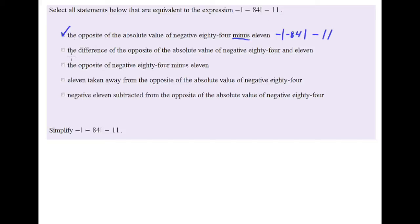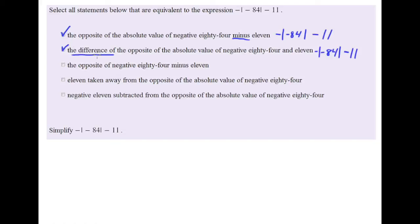The next one says: the difference of the opposite of the absolute value of negative 84 and 11. 'The difference of' indicates subtraction and means we keep things in the exact order given, so I place a minus sign. Then: the opposite of the absolute value of negative 84, and 11. This is the same as the given expression, so this is also a valid way of expressing that statement.